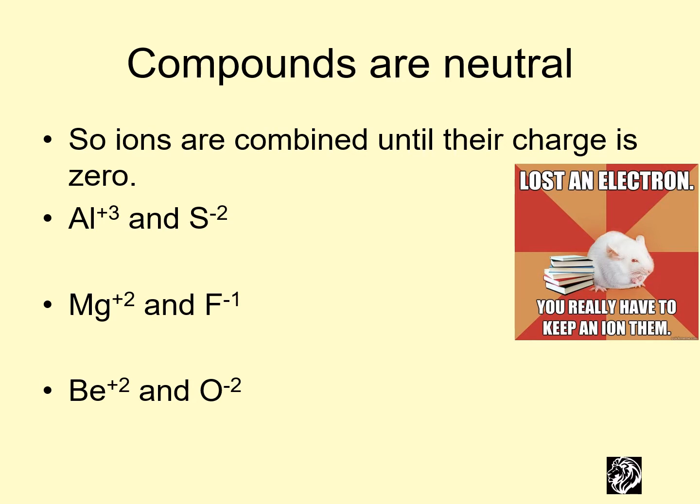So compounds are neutral. Ions are charged particles. So ions combine with each other until their charge is zero. We have aluminum and sulfur. How can their charge be zero? If we have an aluminum with a plus three, sulfur with a negative two, that's not zero. So we need more negative. That's not zero, so we need more positive. That's not zero, so we need more negative. And now we have positive six, negative six. So we get Al2S3.